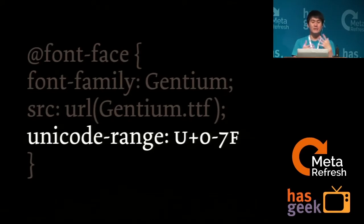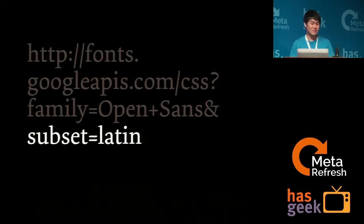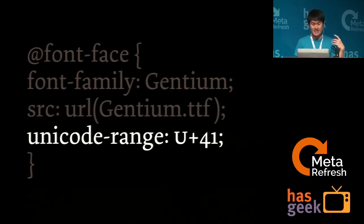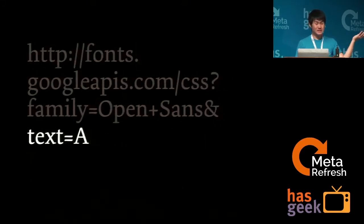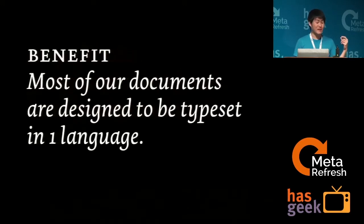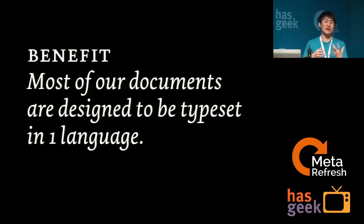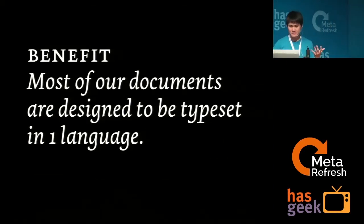In the CSS font-face rule, you specify: 'this font only contains the basic Latin character sets and nothing else.' This tells the client machine which characters are loaded. In Google Web Fonts you use a more readable format — you can say 'just give me Latin.' In Unicode you can target individual code points, like U+0041 for capital letter A. The real benefit comes from the fact that most documents are set in just one or a few languages.